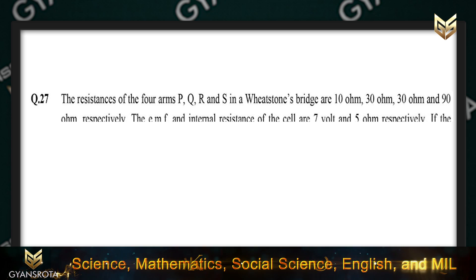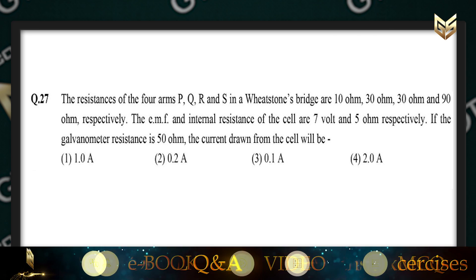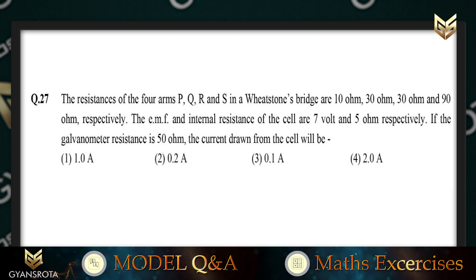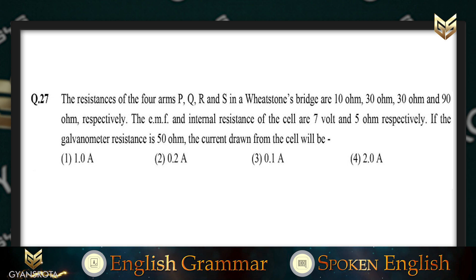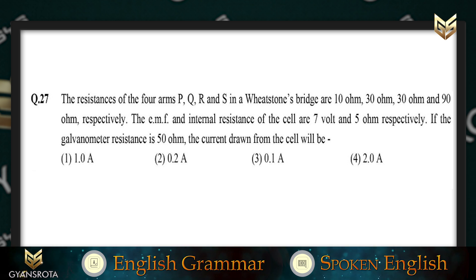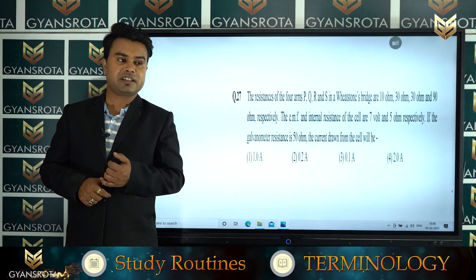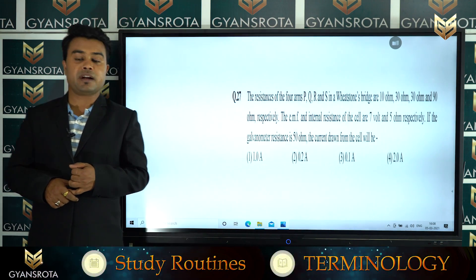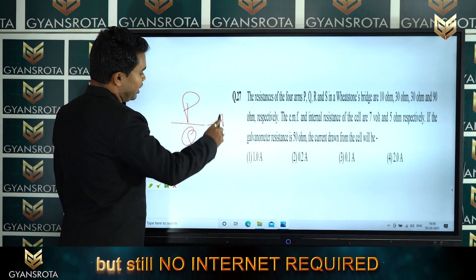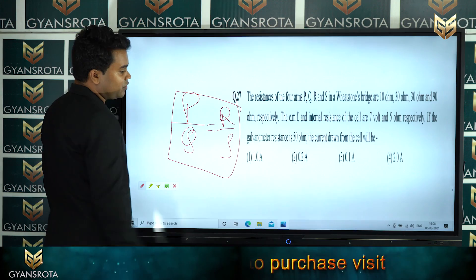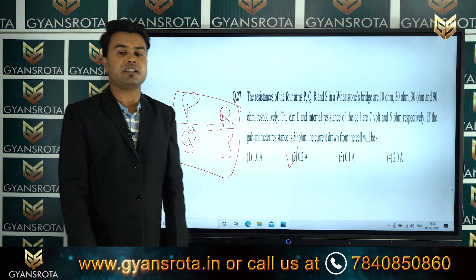Question 27: in a Wheatstone bridge, resistances P, Q, R, and S are 10, 30, 30, and 90 ohm respectively. EMF is 7 volt, internal resistance 5 ohm, galvanometer resistance 50 ohm. Using the balance condition P/Q = R/S, the bridge is balanced and the current drawn from the cell is 0.2 ampere — the correct answer.